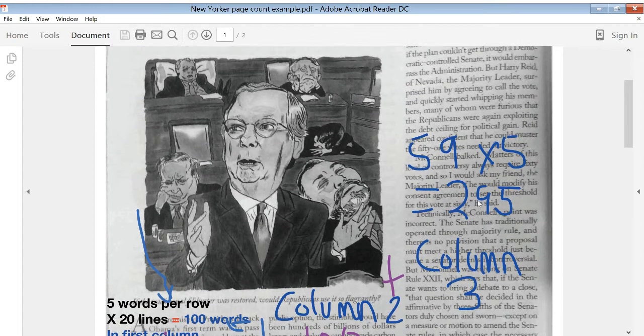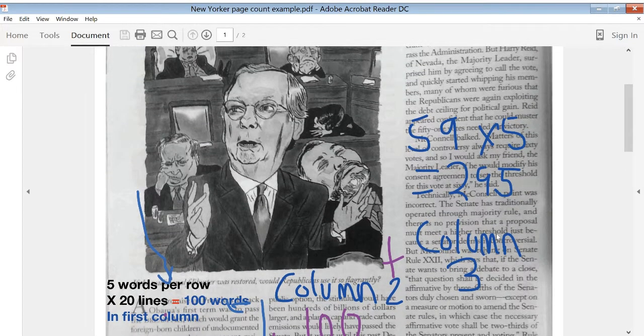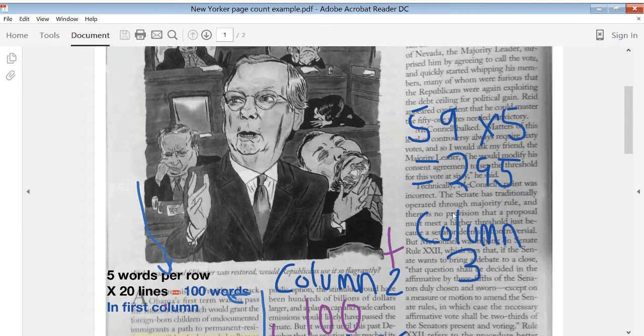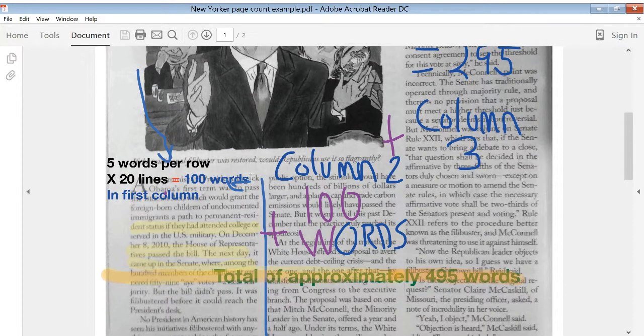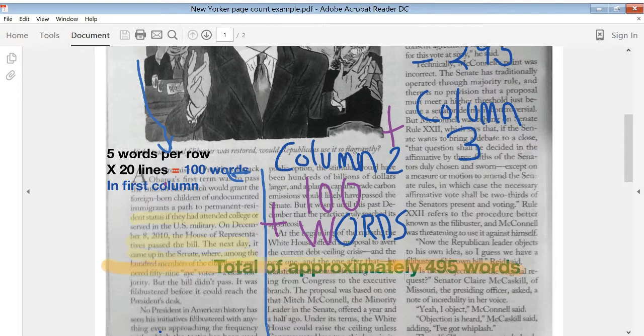Column three on this particular page is much longer. It takes up the entire page length. So I counted 59 rows times, since the width of column, the column is about the same width, times five words average per row equals 295 words. Adding up each column, then, 100 plus 100 plus 295 equals a total of approximately 495 words on this particular page.